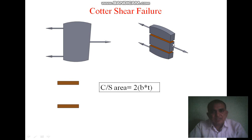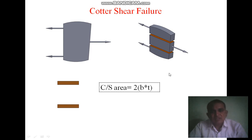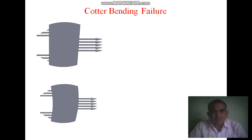Here t is the thickness of the cotter and b is the width of the cotter. So b × t is one area, and again b × t is another area, making 2bt the total cross-sectional area for shear failure of the cotter. Therefore, shear stress tau equals force divided by 2bt.